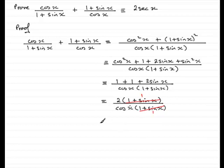So therefore what I've got is that it's identical to 2 divided by cos x. And 2 divided by cos x is the same as 2 times 1 over cos x or 2 times sec x.